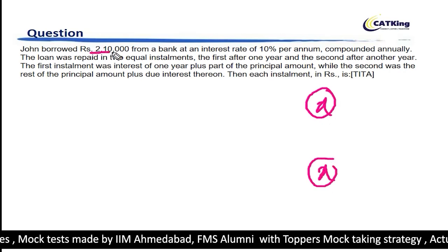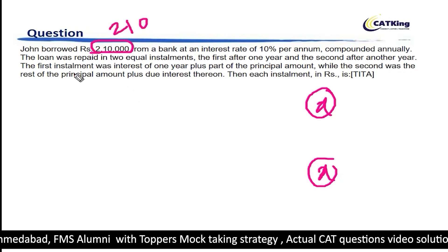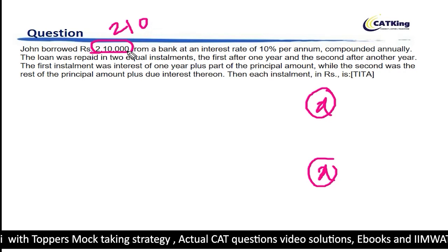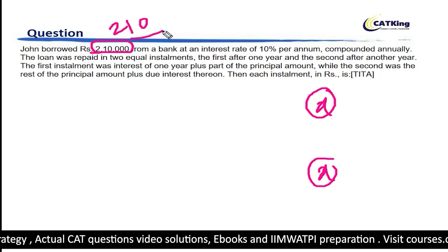For the sake of simplicity, let's take the amount as 210. Because every time we write these many zeros, it will kill time. That's my tip to you. Take 210 and begin.